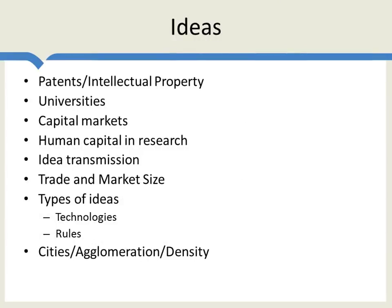The model was a real technical achievement, but the really important aspect is that economists often don't start to think about things until they have a model. What Romer did is put ideas at the heart of growth theory. Once you do that, you start thinking about a lot of new things — patents and intellectual property, universities, capital markets like venture capitalists, strong capital markets so entrepreneurs can take their firms public, human capital, and why research might be underfunded because of spillovers.